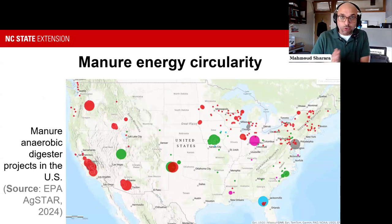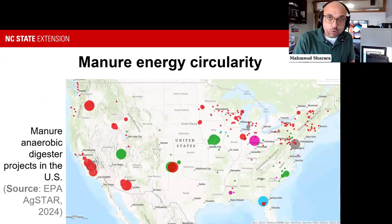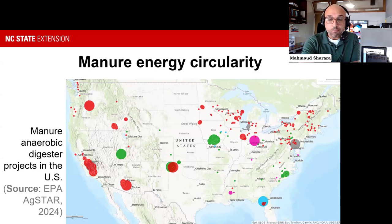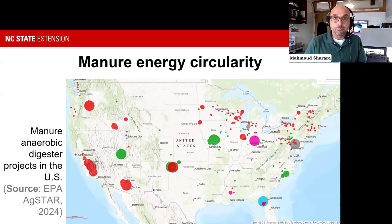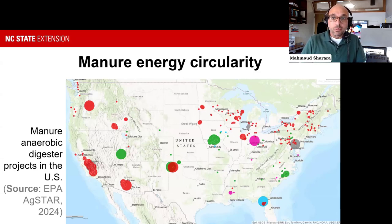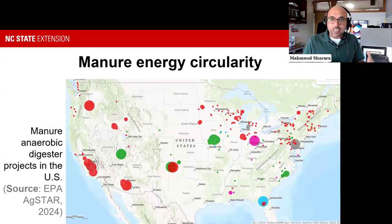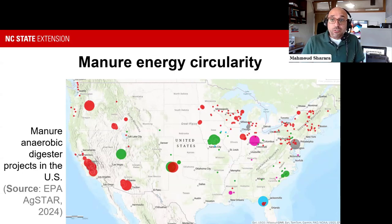We are actually seeing a success story in increasing energy circularity in manure. What you're seeing here is a map borrowed from the EPA AgSTAR tool that you can access, showing the digesters across the United States by type of manure—with red circles representing dairy and cattle.